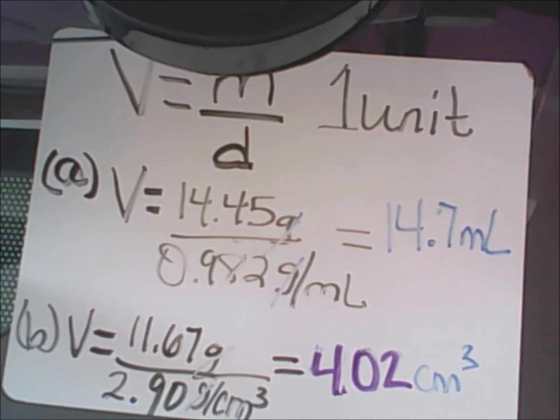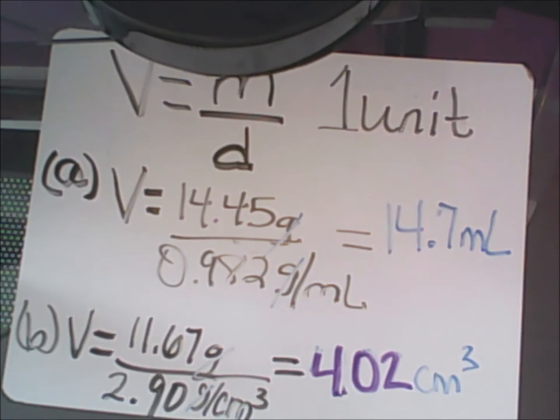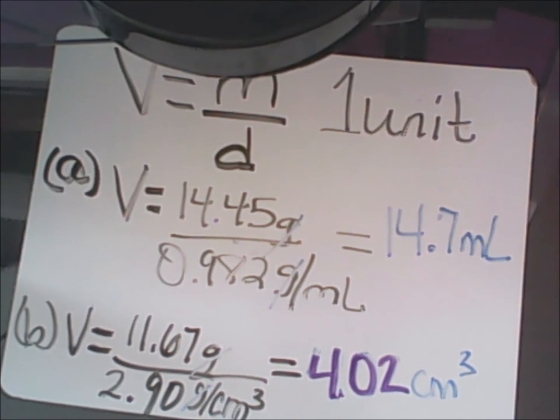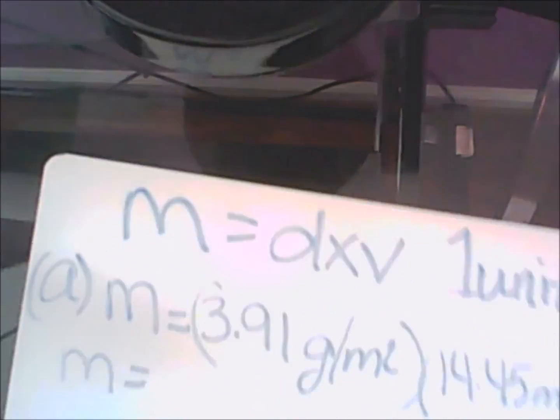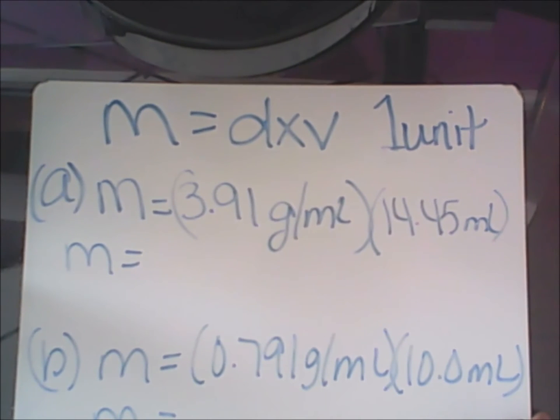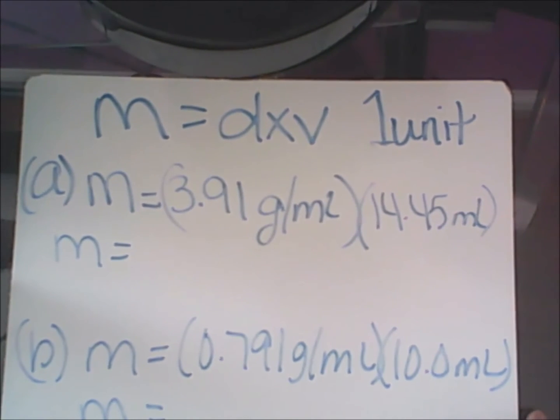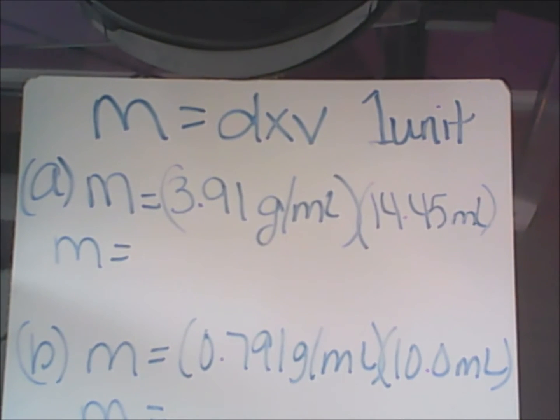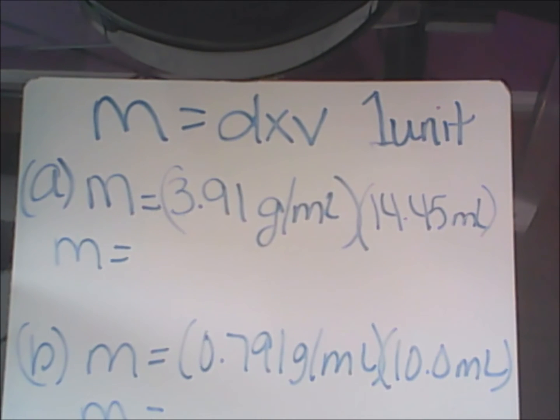Let's take a look at the last example on your worksheet where you have to calculate the mass. The mass again consists of only one unit. So what I'm going to do is put the final formula here of density times volume. In my problem letter a, I have the volume of 14.45 milliliters, the density is 3.91 grams per milliliter. You should notice something here: two units will cancel out. My milliliters will cancel out.